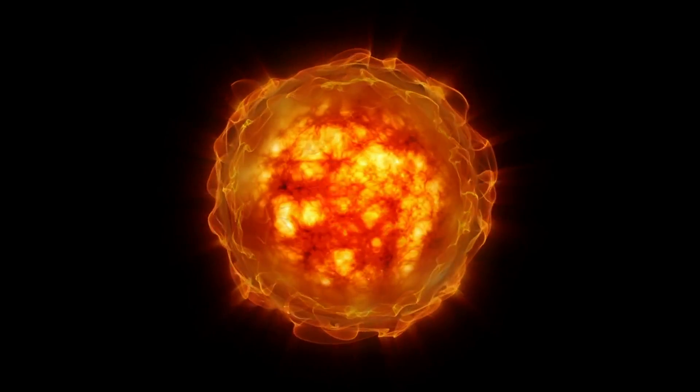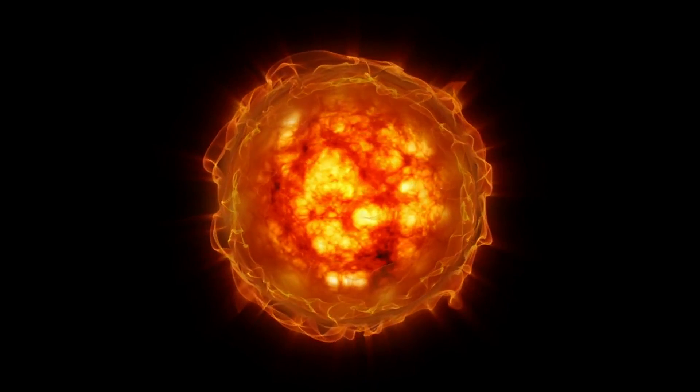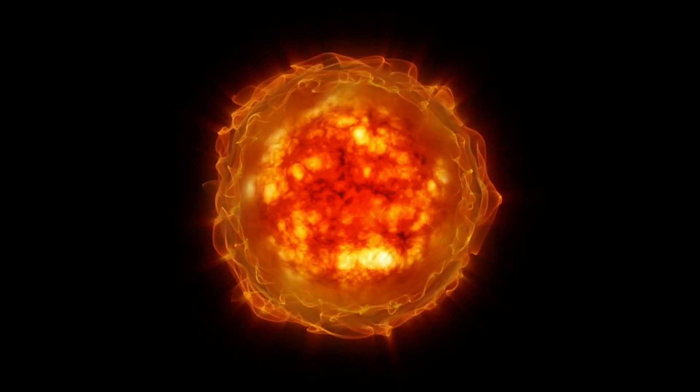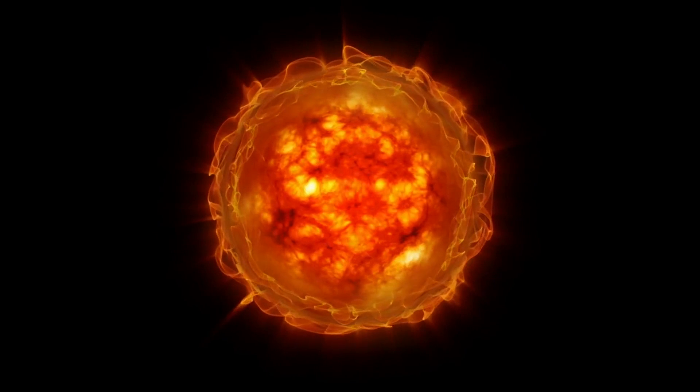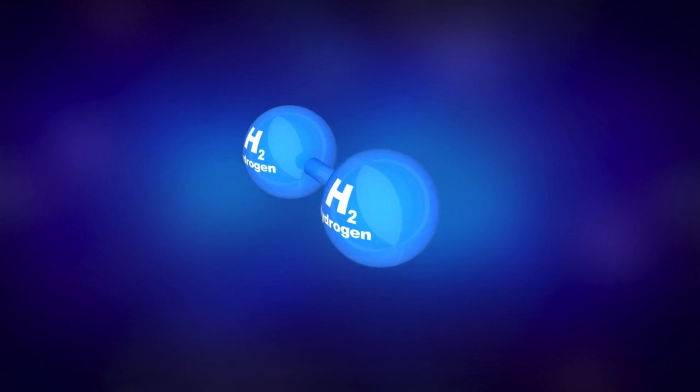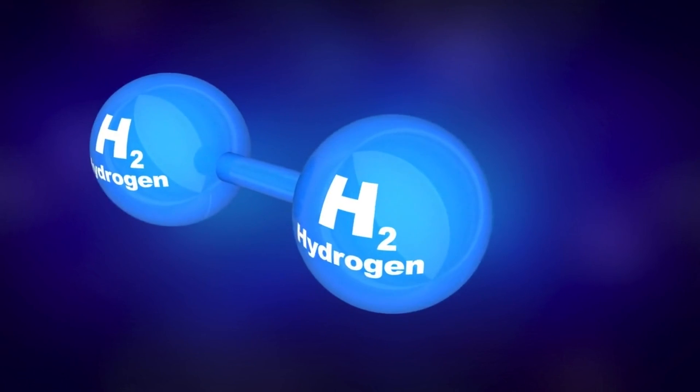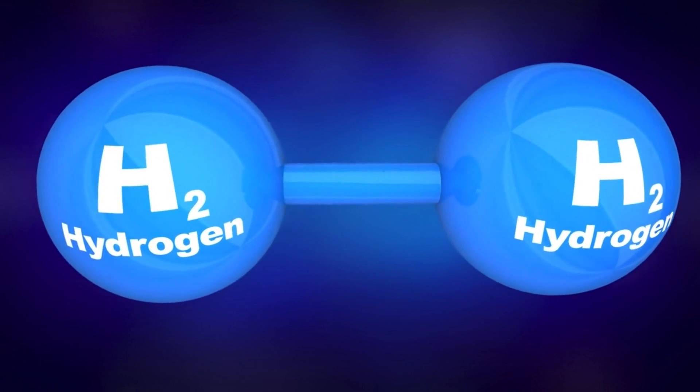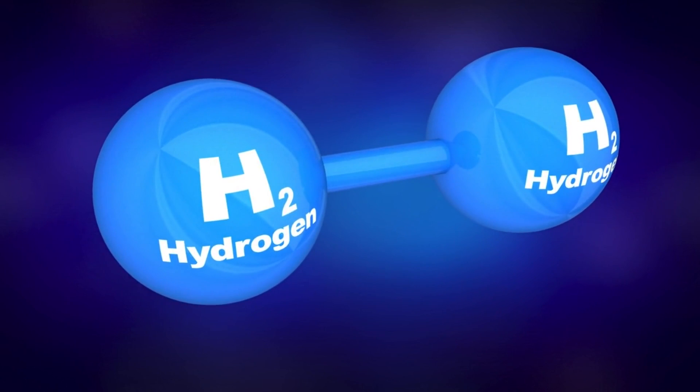This energy is released in the form of intense bursts of light across the electromagnetic spectrum, from radio waves to gamma rays. The energy released during a solar flare can be equivalent to millions of hydrogen bombs exploding simultaneously.